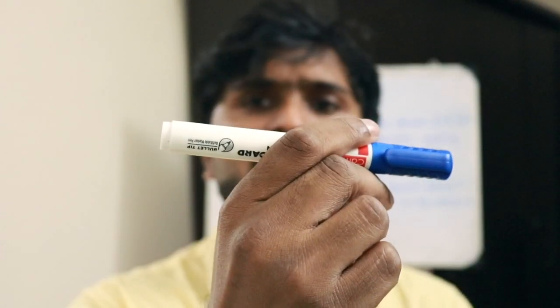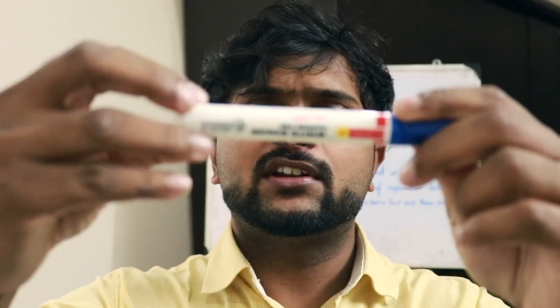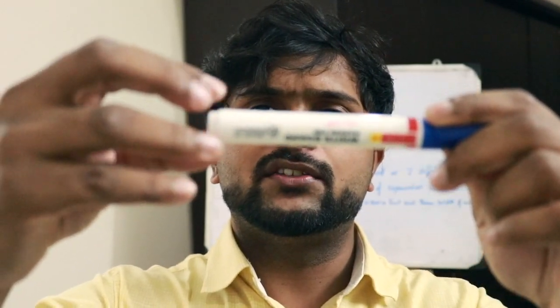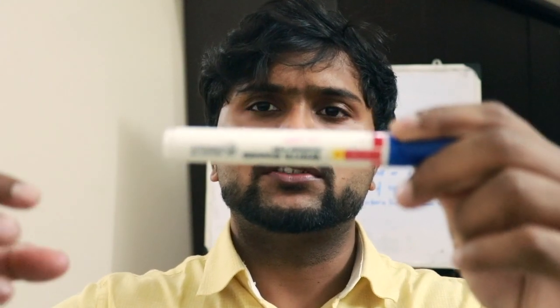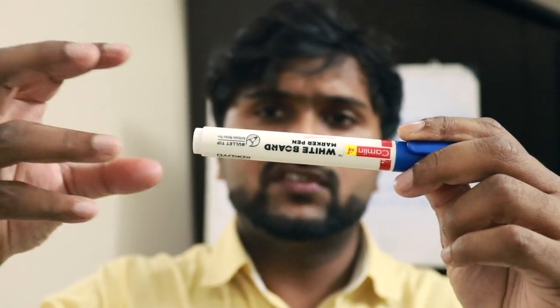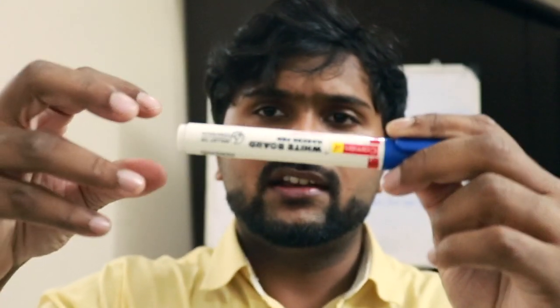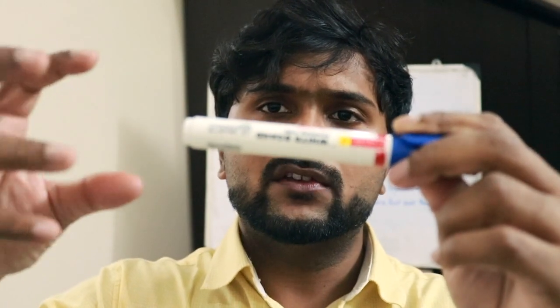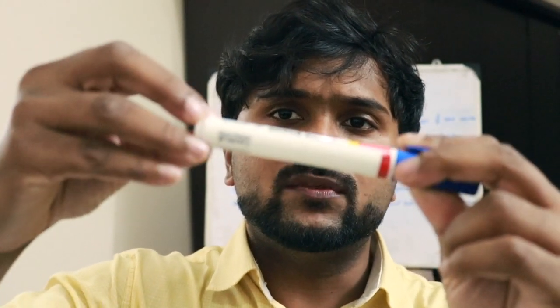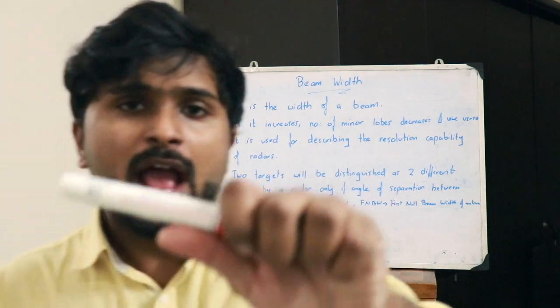Let us assume this as a particular antenna, and this antenna will generate radiation towards a particular direction. The electromagnetic waves generated in that direction form a beam, and the width of this beam is referred to as beam width.